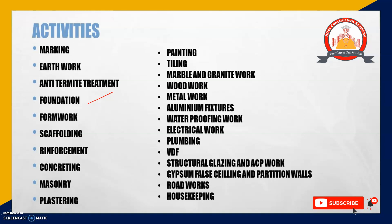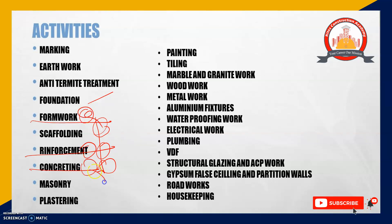When the combination of footing and column is there, the foundation involves three activities: formwork, reinforcement work, and concrete work. For example, when executing a footing, you first do the reinforcement activity, then the formwork activity, then the concreting activity. In some cases these can be interchanged — for slab concreting, formwork is done first, then reinforcement, then concreting.